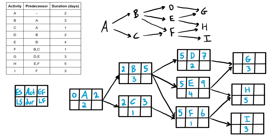For the early start of G, there are two predecessors, so we take the larger value: seven or nine — we take nine. For activity H, we also have two predecessors; nine or six — we bring in the larger nine. For activity I, there's only one predecessor, F, so we bring in six. Then: six plus three is nine for I, nine plus five is fourteen for H, and nine plus three is twelve for G.